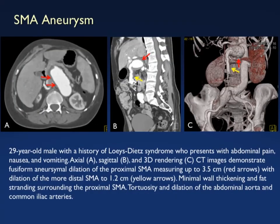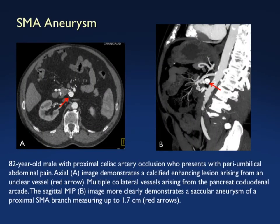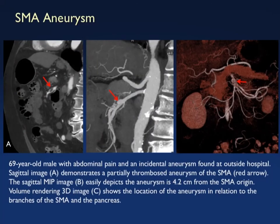Here is a nice example of a patient with Loeys-Dietz syndrome with a very large SMA aneurysm — about as large as it gets. There's also another patient with proximal celiac artery occlusion and an aneurysm off the SMA, and another example of an SMA aneurysm with thrombus present. Our routine use of 3D imaging makes it very easy to detect these aneurysms.